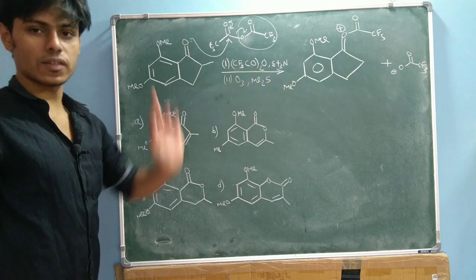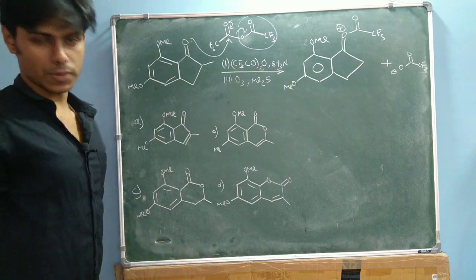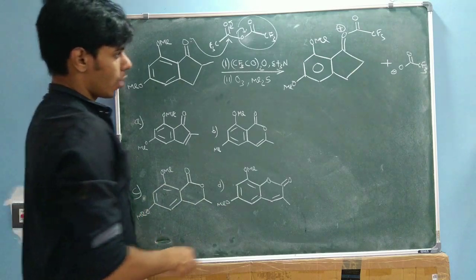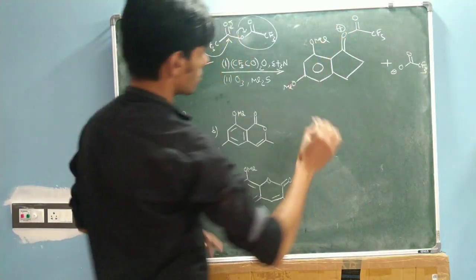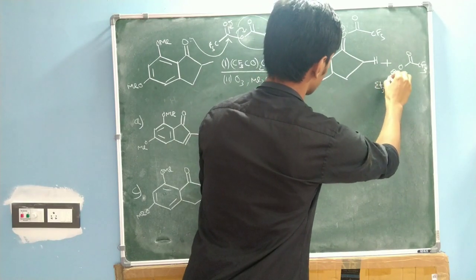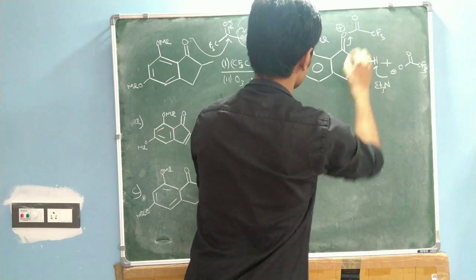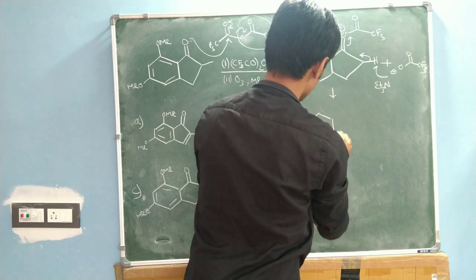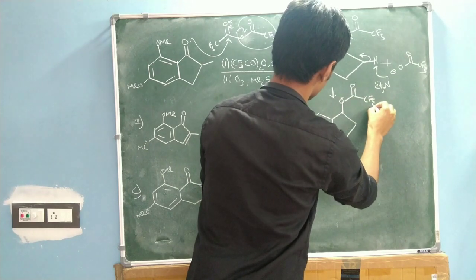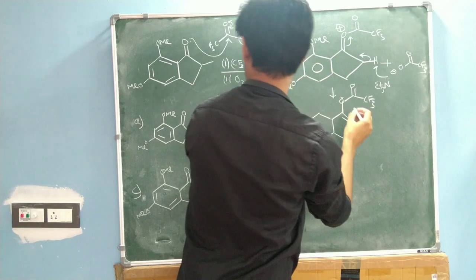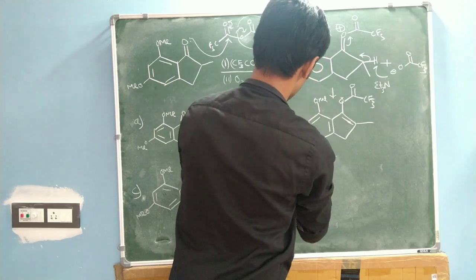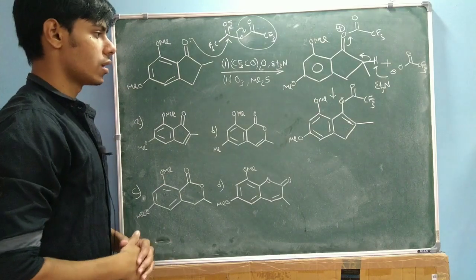Up to this point we haven't used triethylamine. Triethylamine is basically a base. As the positive charge is induced, this proton becomes very acidic, and triethylamine takes this proton to form an enolate. So you form this enolate with –CO–O–CF3, and you now have a C=C double bond — this is the product of the first step.